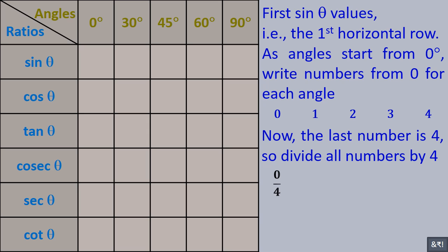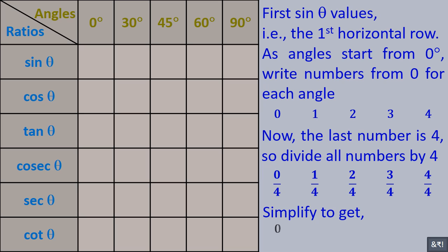So divide all numbers by 4: 0 by 4, 1 by 4, 2 by 4, 3 by 4, 4 by 4. Simplify to get: 0, 1/4, 1/2, 3/4, 1.